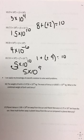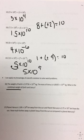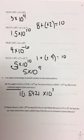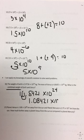Number thirty-six, the weight of the Earth is 5.9736 times 10 to the 24th kilograms. The mass of Venus is 4.8685 times 10 to the 24th kilograms. What is the combined weight of Earth and Venus? Combined weight means add. The exponents are already the same, so you get 10.8421 times 10 to the 24th power. Moving the decimal up one place, it becomes 1.08421 times 10 to the 25th power.